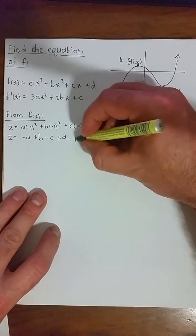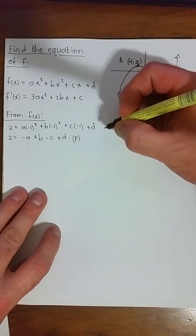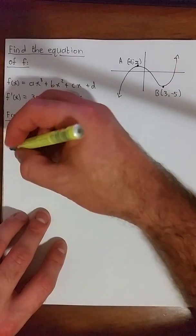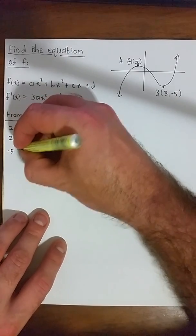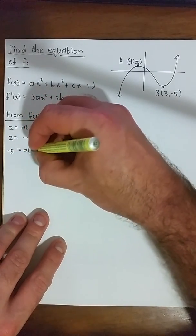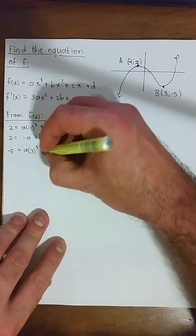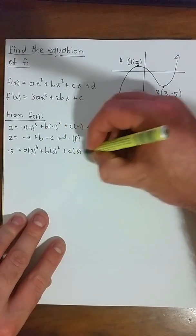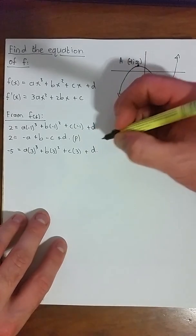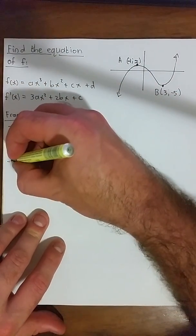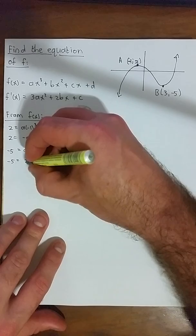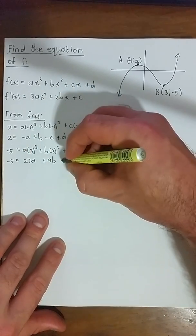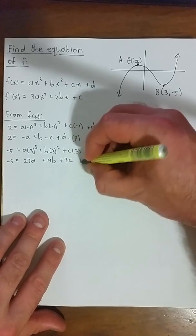Let's call that equation p. We can also substitute in point B, and that gives us -5 = a(3)³ + b(3)² + c(3) + d. Simplify that slightly again, and we get -5 = 27a + 9b + 3c + d.